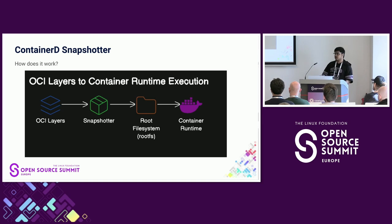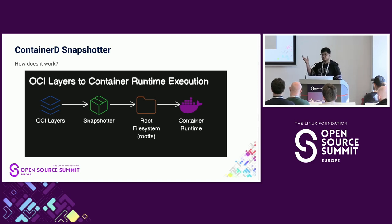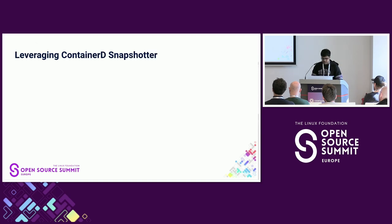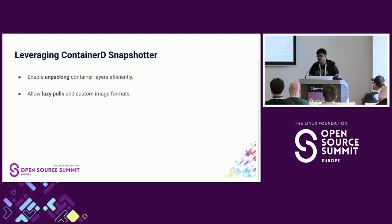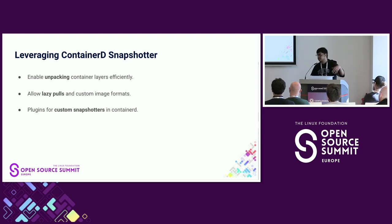I'm sure you folks are aware of this, but I wanted to recap: we have OCI registries like Docker Hub and others. And there's this thing called Snapshotters, which ContainerD has popularized. It lets us pull OCI layers and unpack them into a root file system that can be handed off to whichever container runtime we use. Snapshotters are the key ingredient here because they enable how we unpack something from the internet — they allow fancy things like lazy pulls, where you don't pull the entire data immediately, just what's needed. You can also customize them, so you could have something that isn't even a full OCI format.